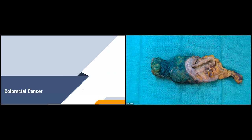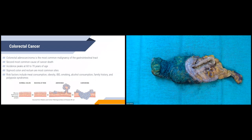Our specimen today is out for colorectal cancer. Colorectal adenocarcinoma is the most common malignancy of the gastrointestinal tract; it's the second most common cause of cancer death. Peak incidence is around 60 to 70 years of age, and the most common location is the sigmoid colon or rectum — so we get quite a few of these specimens in the lab. Risk factors include meat consumption, obesity, inflammatory bowel disease, smoking, alcohol consumption, family history, and polyposis syndromes.